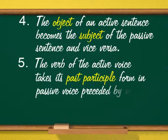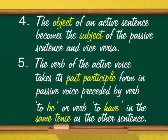Fourth, the object of an active sentence becomes the subject of the passive sentence and vice versa. Hence, the verb takes its past participle form in passive voice, preceded by verb to be or verb to have in the same tense as the other sentence.